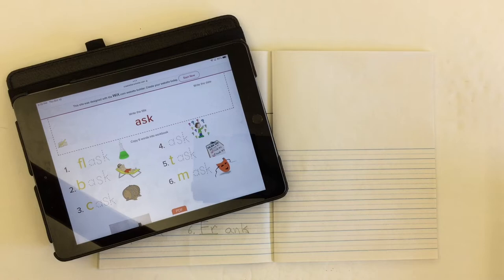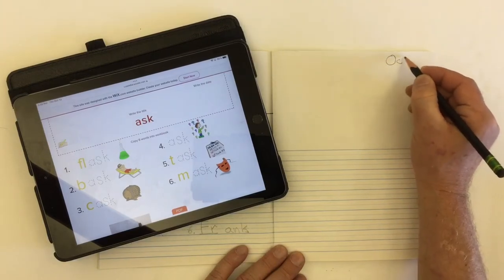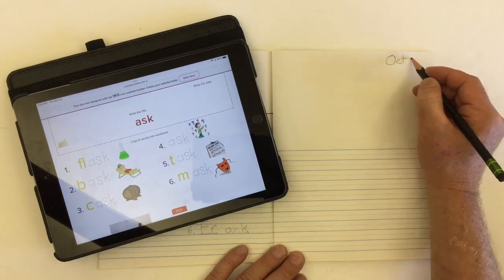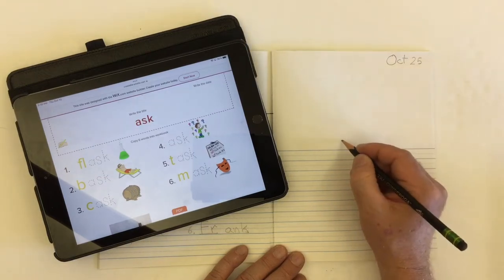Let's start off by getting our date onto our page first. Today's date for me here happens to be October the 25th, but you write whatever date it is for you. We need to put our title right up here at the top of the lines: A-S-K.